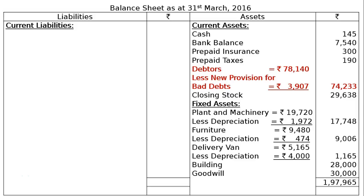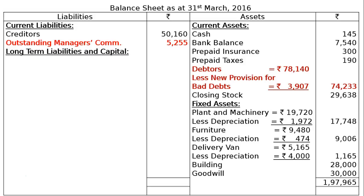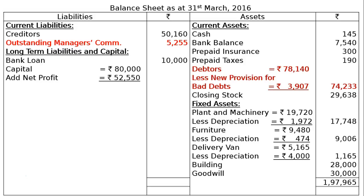On the liability side, current liabilities: creditors Rs. 50,160, outstanding manager's commission Rs. 5,255. Long-term liabilities: bank loan Rs. 10,000. Capital Rs. 80,000, add net profit Rs. 52,550, giving Rs. 1,32,550 in the final column. Total liabilities side: Rs. 1,97,965. This is the final answer.